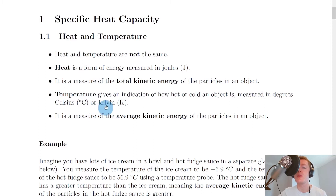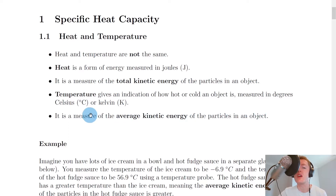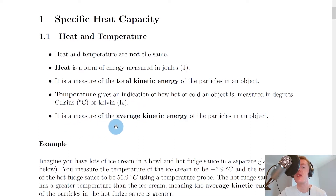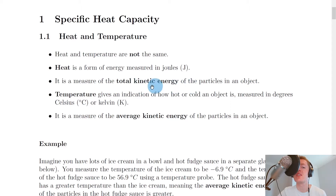Whereas temperature in general terms gives an indication of how hot or cold an object is, measured in degrees Celsius or Kelvin. And the specific definition for temperature is that it's a measure of the average kinetic energy of the particles in an object. So notice the difference here between total kinetic energy for heat and average kinetic energy for temperature.